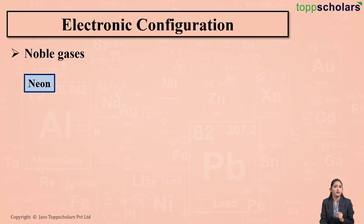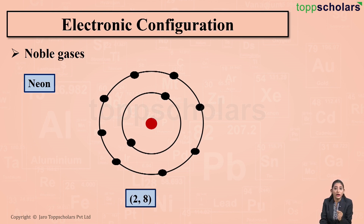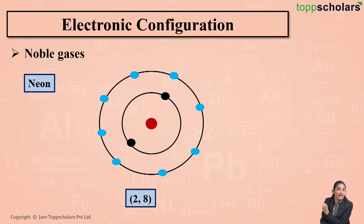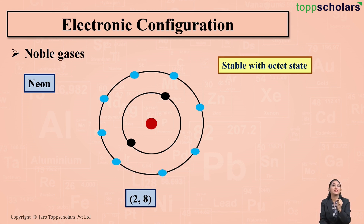What about neon? The atomic number of neon is 10, so its electronic configuration is 2, 8. As you can see, neon has eight electrons in its outermost shell. Since neon has eight electrons in its outermost shell, neon is said to be stable with the octet state. Octet means eight electrons in the outermost shell.